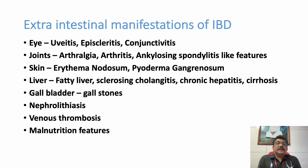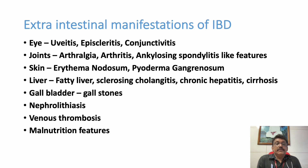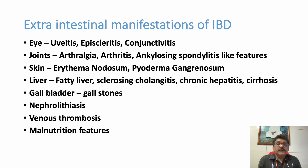There are extra-intestinal manifestations of inflammatory bowel disease. Both ulcerative colitis and Crohn's disease can have these problems in various intensities. Patients can have uveitis, episcleritis, conjunctivitis, and arthritis — especially ankylosing spondylitis-like features — where lower limbs are predominantly involved with asymmetrical joint involvement, sacroiliac joint involvement, and lower spine involvement.